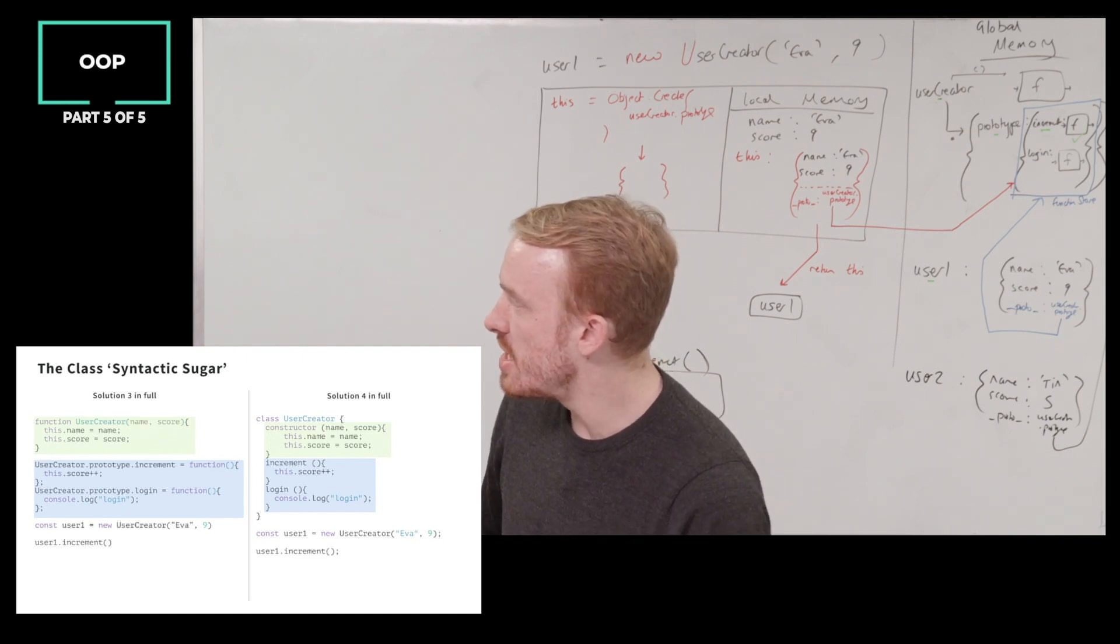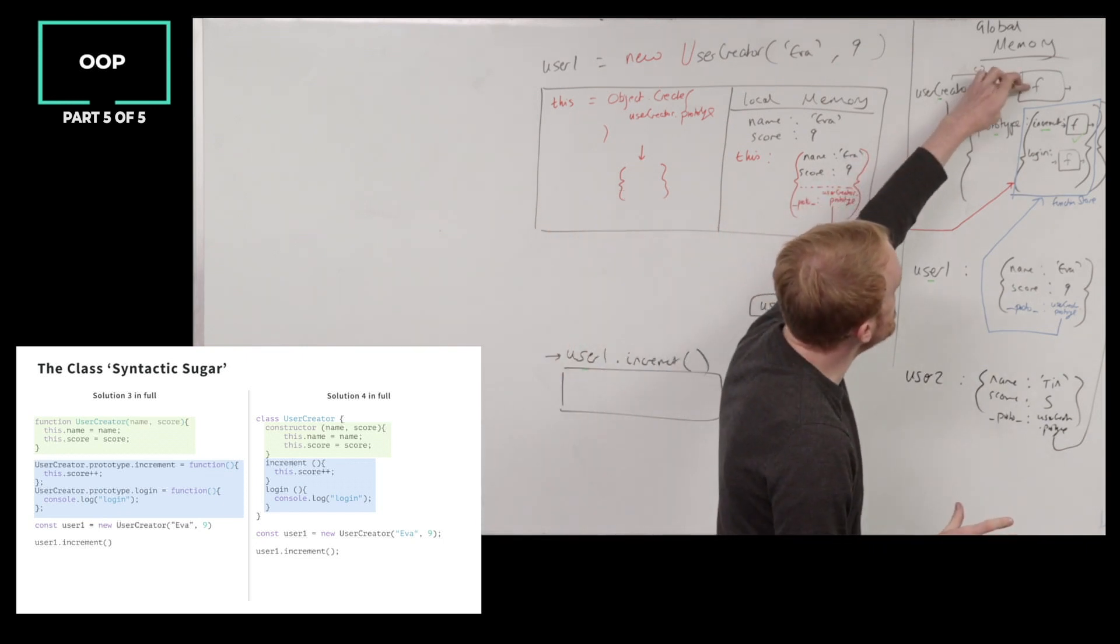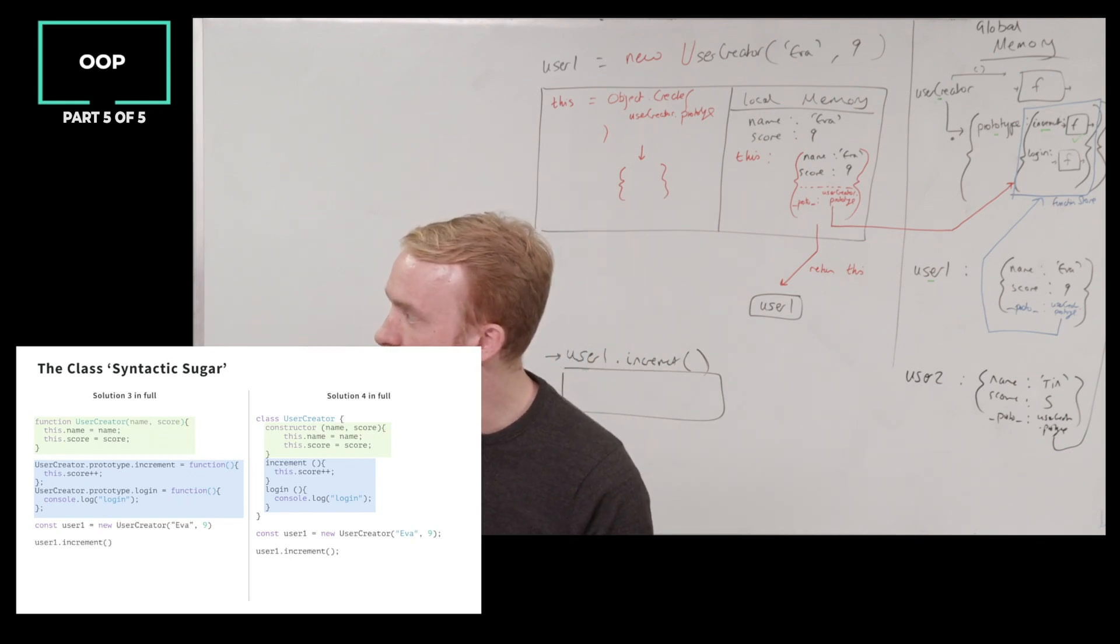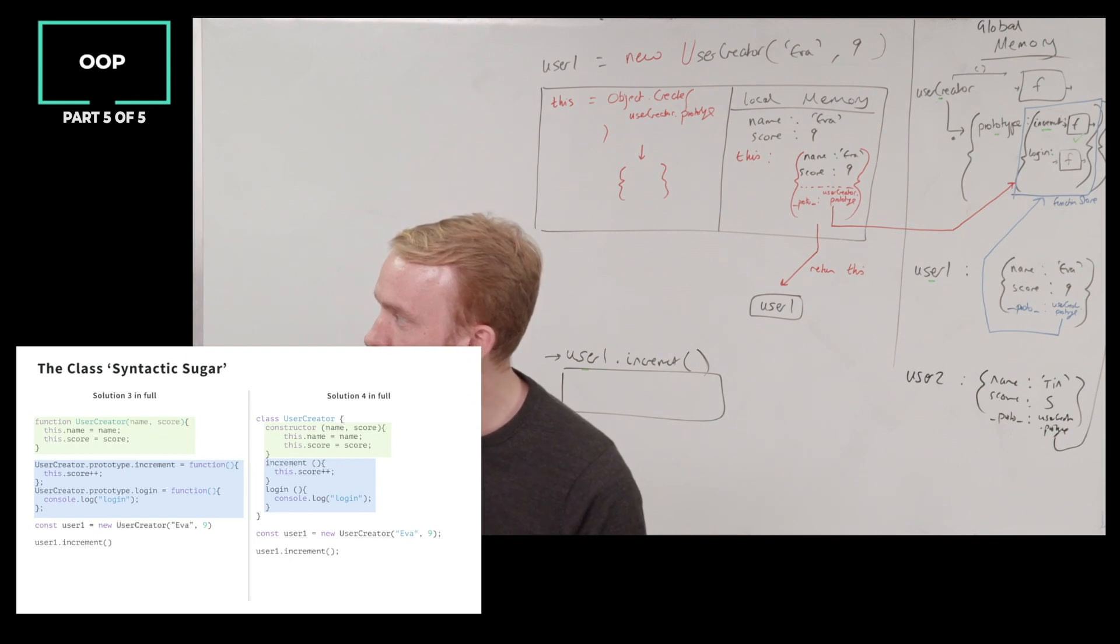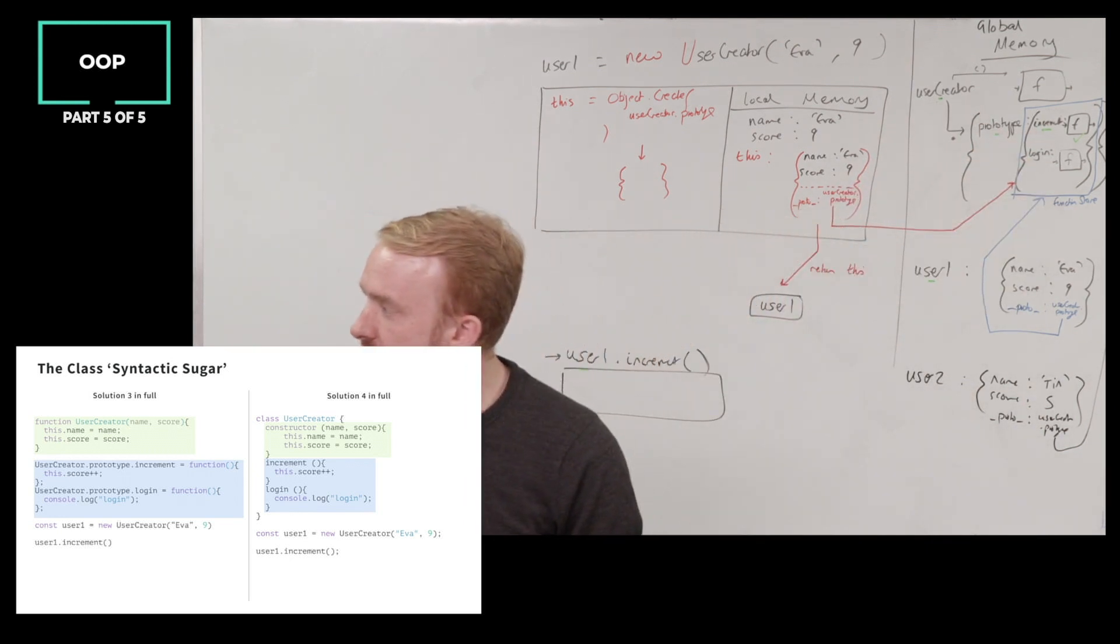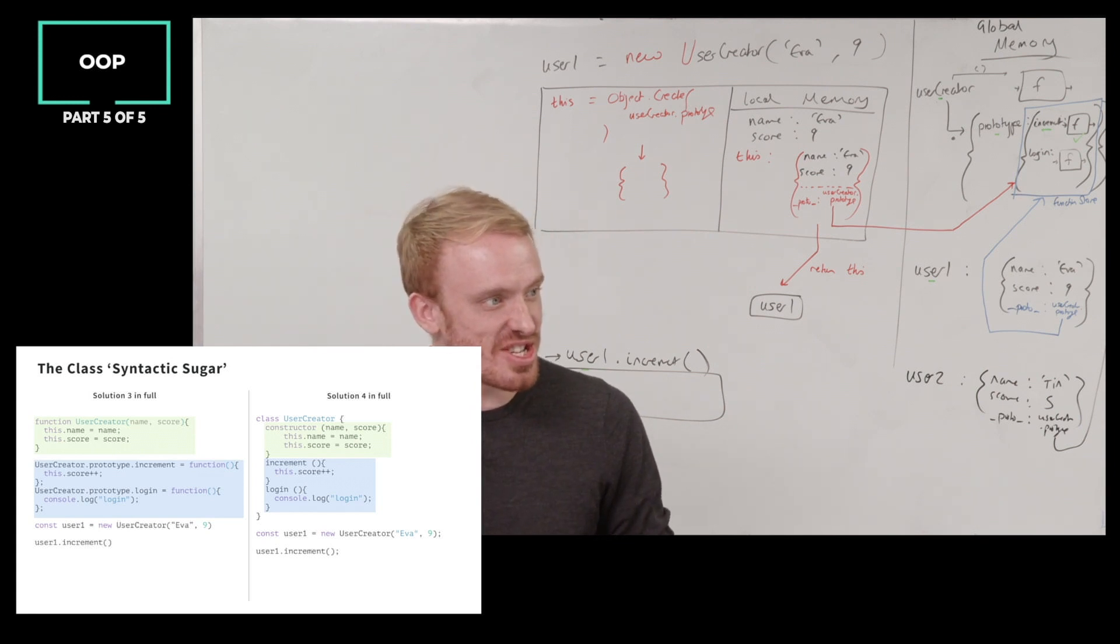The class syntactic sugar takes the function definition piece of user creator and calls it constructor. It's exactly the same functionality. You see this.name equals name, calls it constructor as a sort of subtitle. And then it takes the functions that we manually stored, user creator dot prototype dot increment, and it allows us to just list them below, and then we wrap the whole thing in something called a class. And you can call this user creator, class user creator.